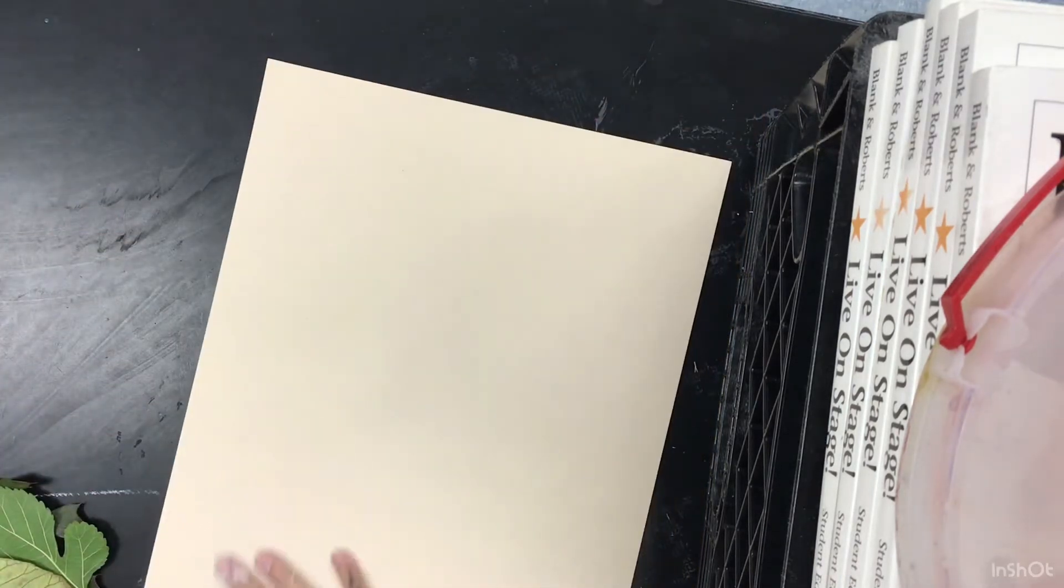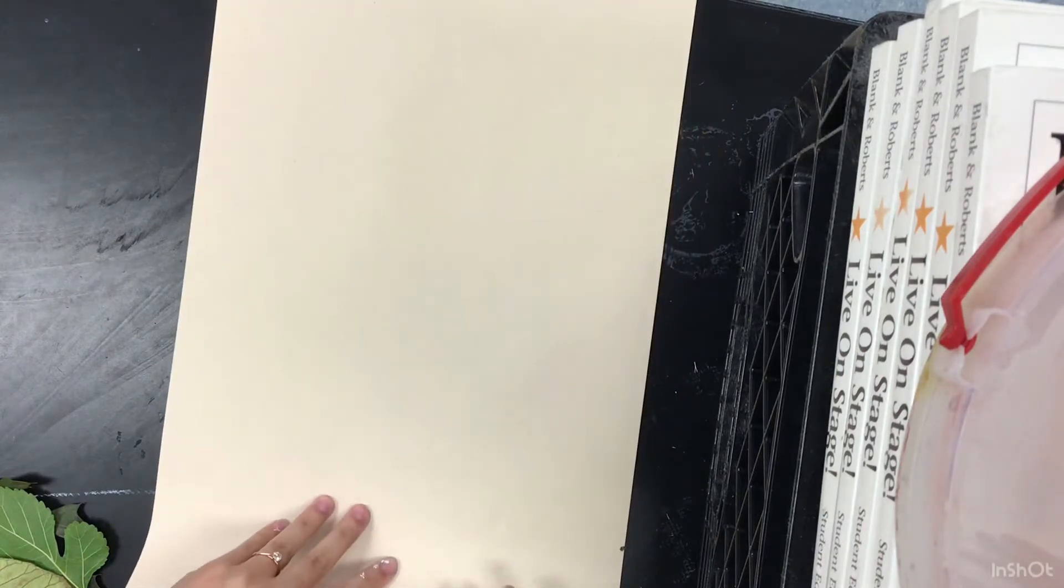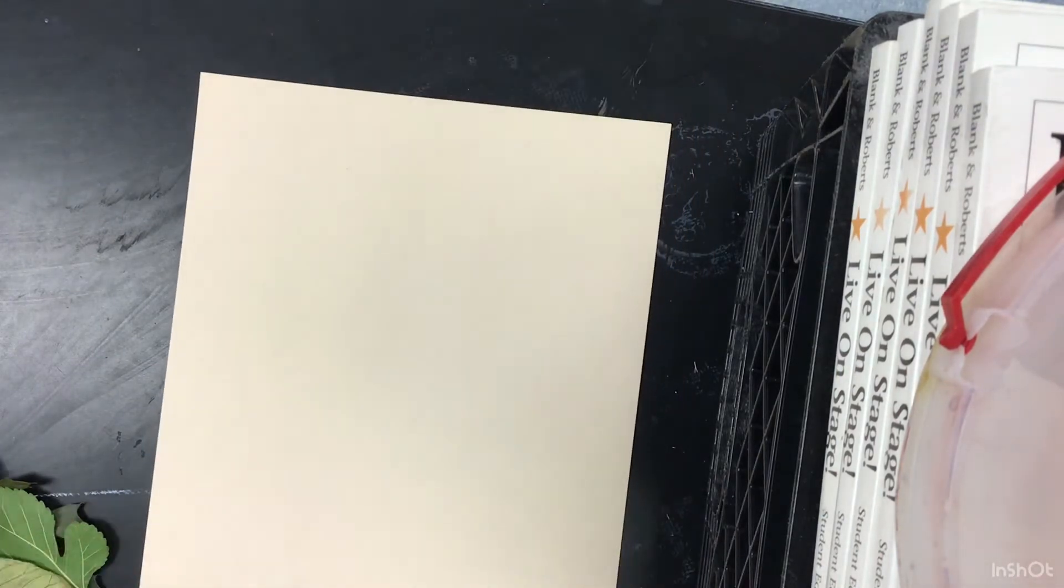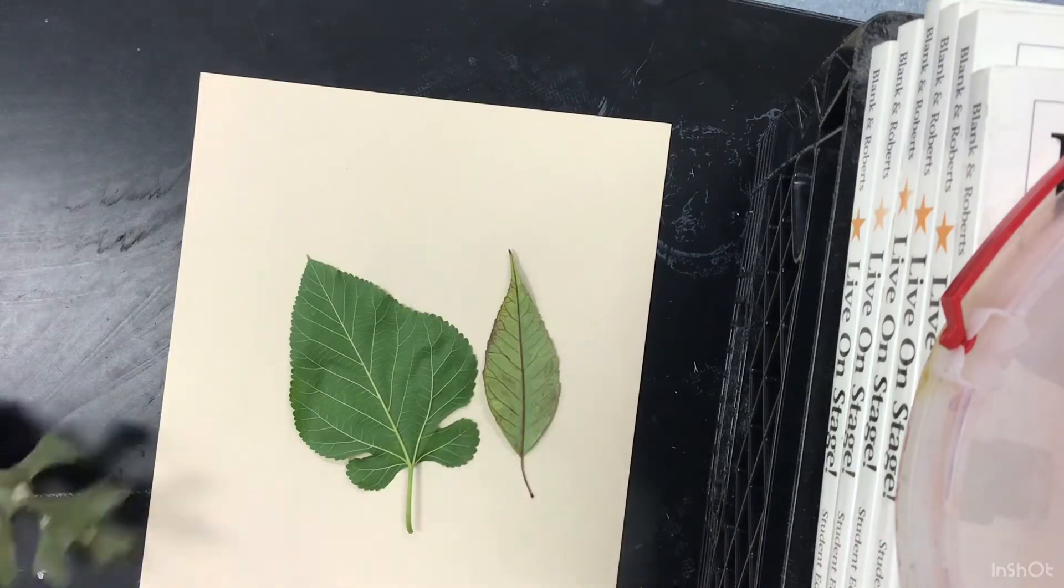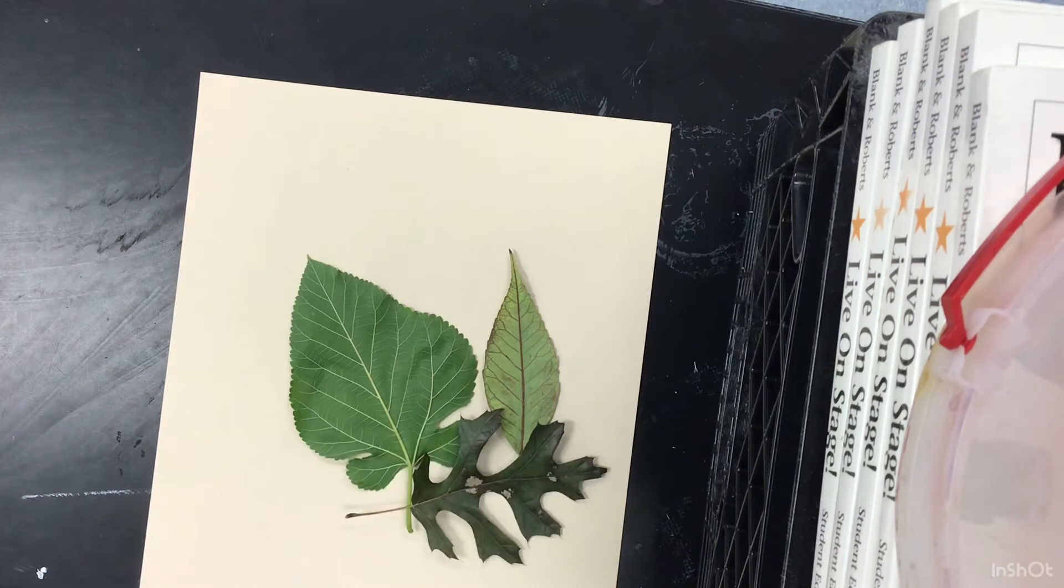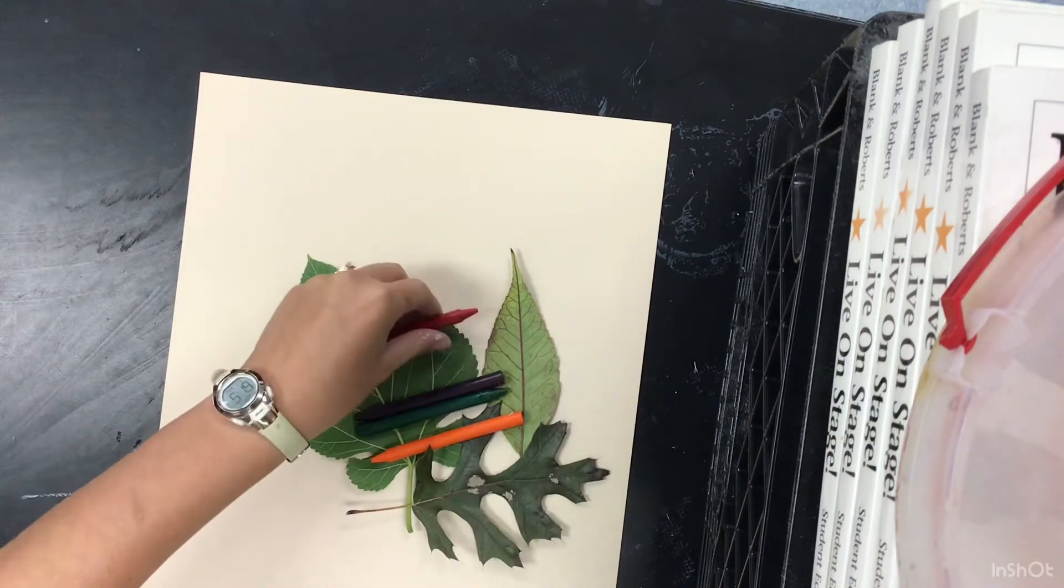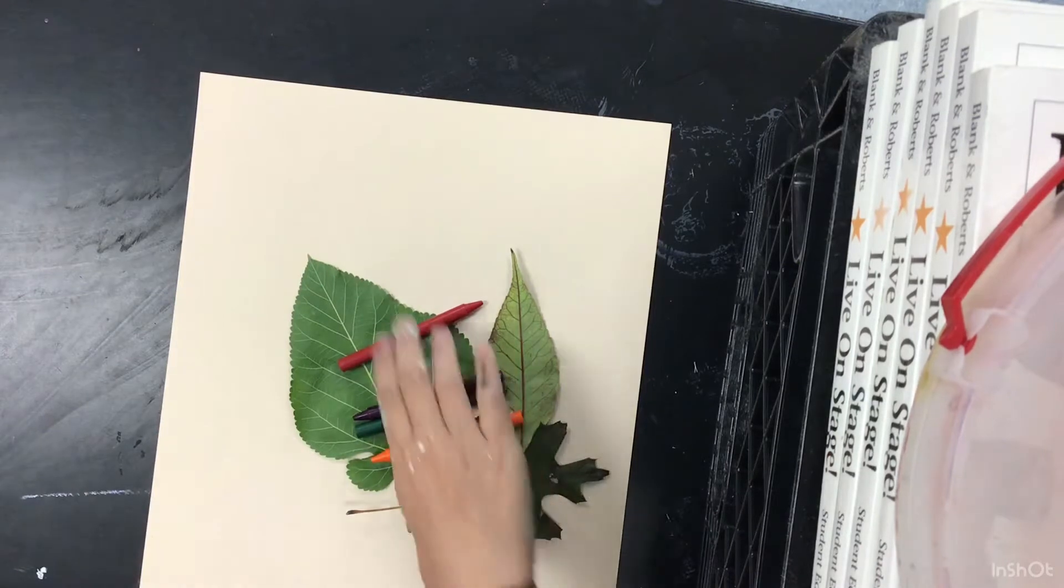So I have my long piece of paper that's thin enough that I can feel underneath it. I have three different types of leaves and crayons without the paper. That's important.